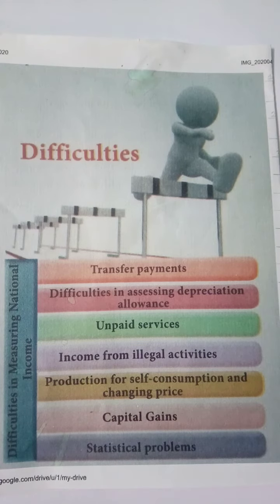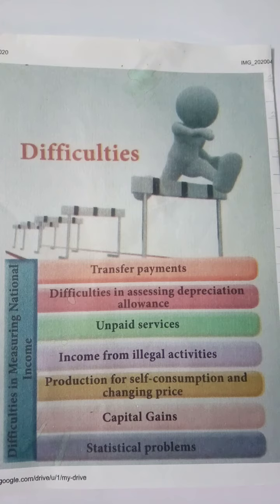The first difficulty is transfer payment. Payments in the form of pension, unemployment allowance, subsidies, etc. are government expenditure and not included in national income.